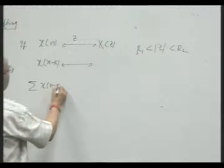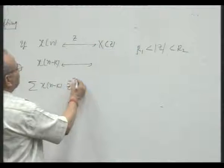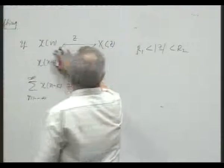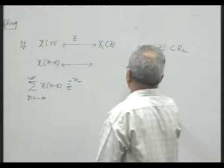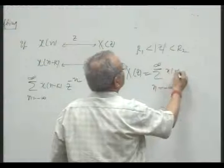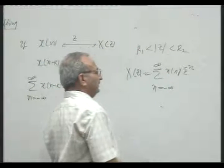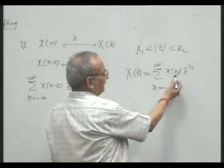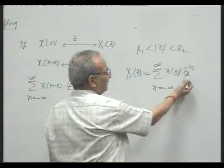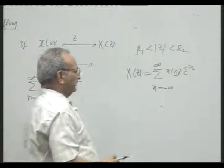Let us try to find out the z-transform of x[minus k]. From the definition of z-transform, I write this to make you understand something interesting. When I introduce a transform, x is a function of n, the exponent of z is minus n. This minus n and n are equal in the output, so z replaces n and you get X(z). That is the argument. And this is a two-sided signal.